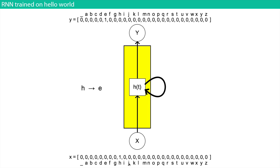If we want to train the network on the sequence 'hello world,' we make X equal to the one-hot vector for H and Y equal to the one-hot vector for E. Then we do the same for E to L, L to L, L to O, O to space, space to W, and so on all the way to the end.